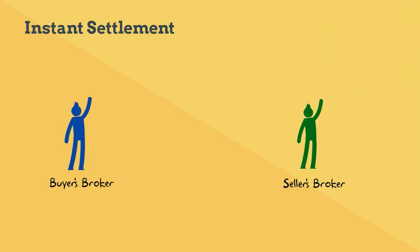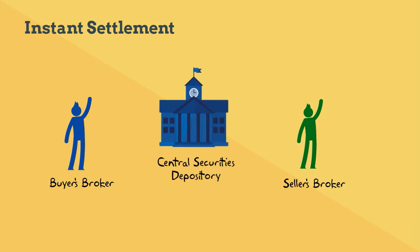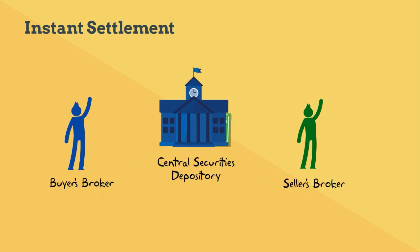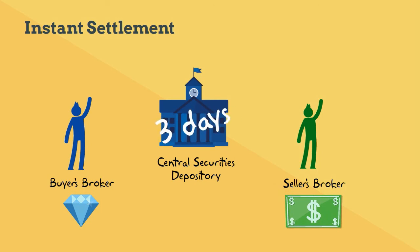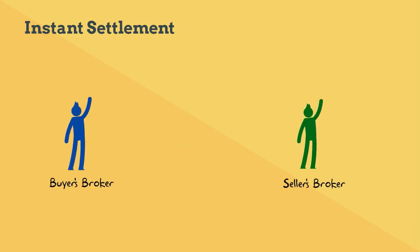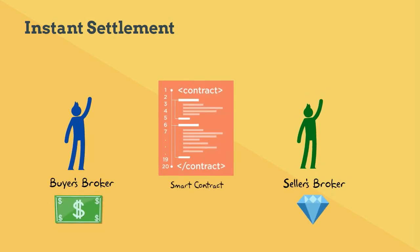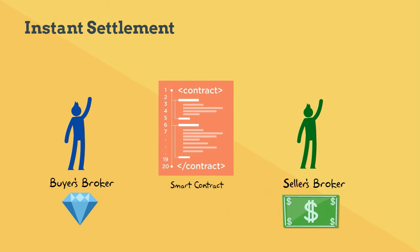Why is blockchain useful? Currently, for a securities transaction, a buyer's broker and seller's broker go through essential securities stipulations during the settlement period. The authority transfers ownership of securities when payment has been made, and the settlement process now takes three days. Blockchain allows instant settlement, which means enormous cost-cutting potential.